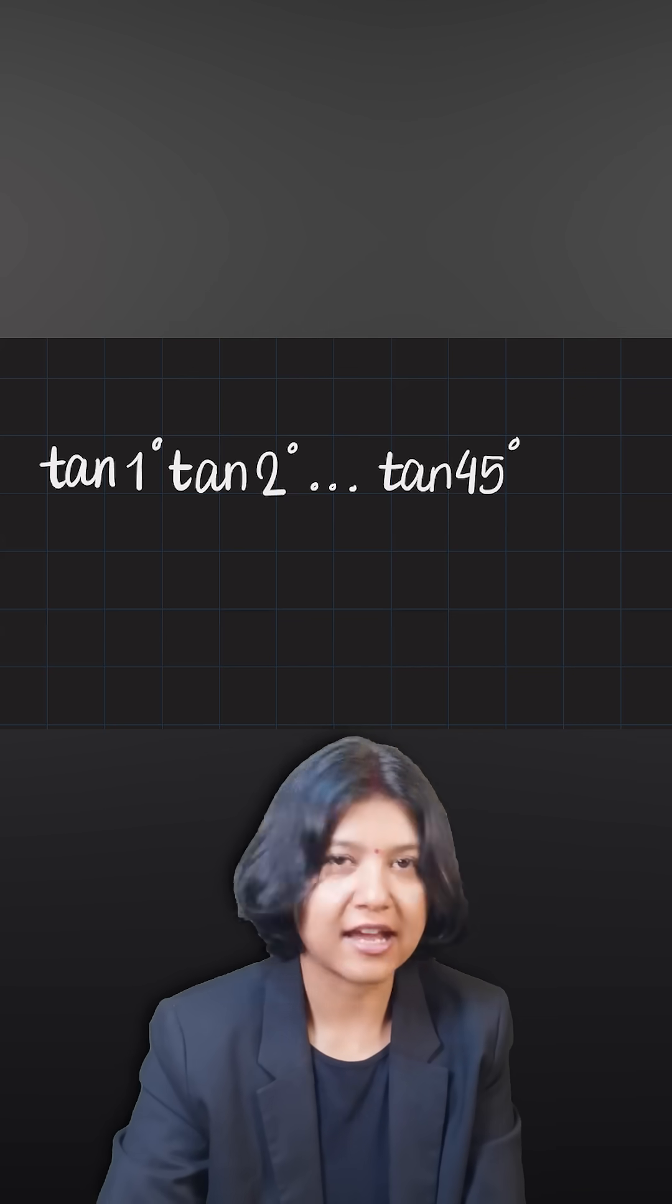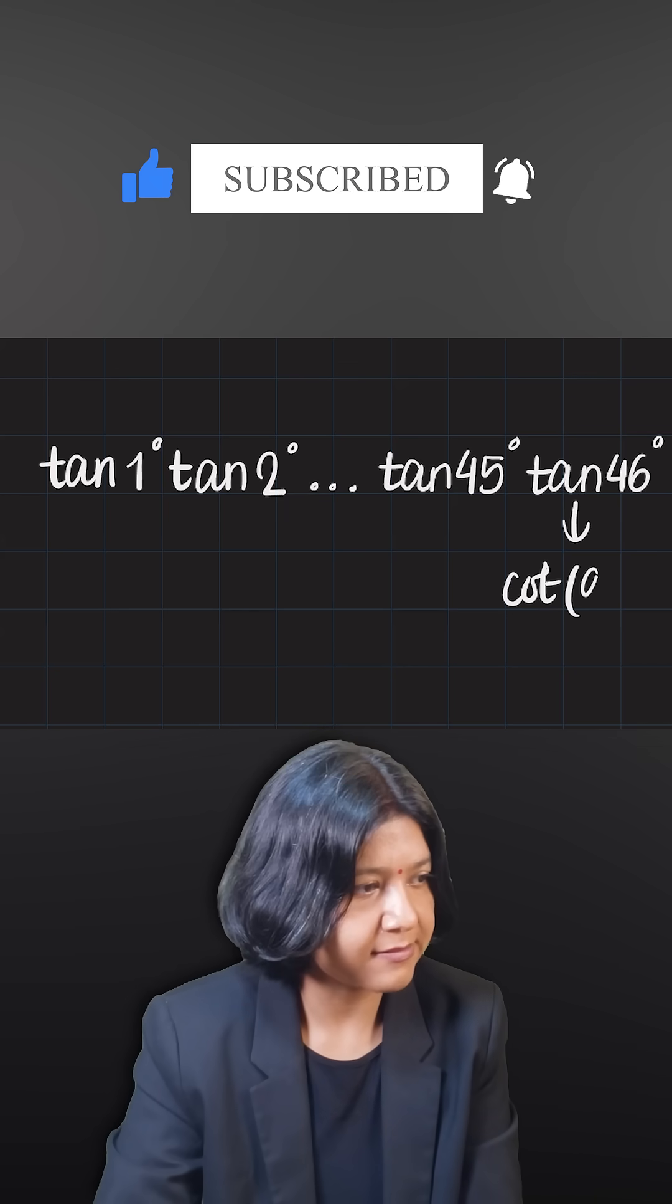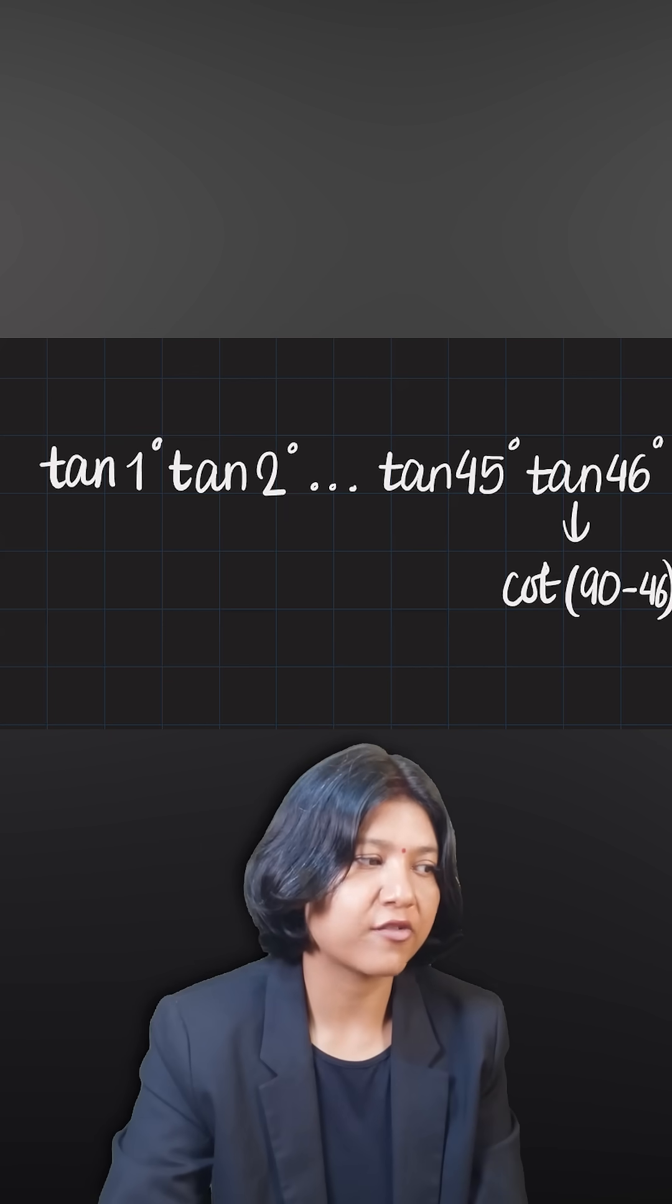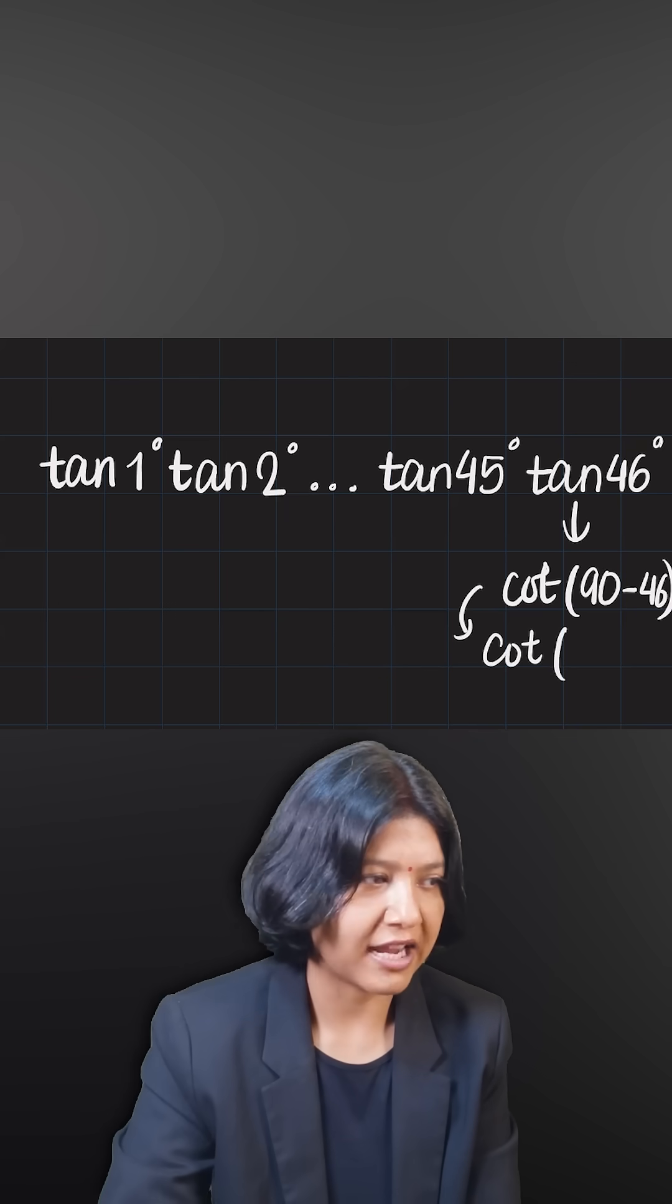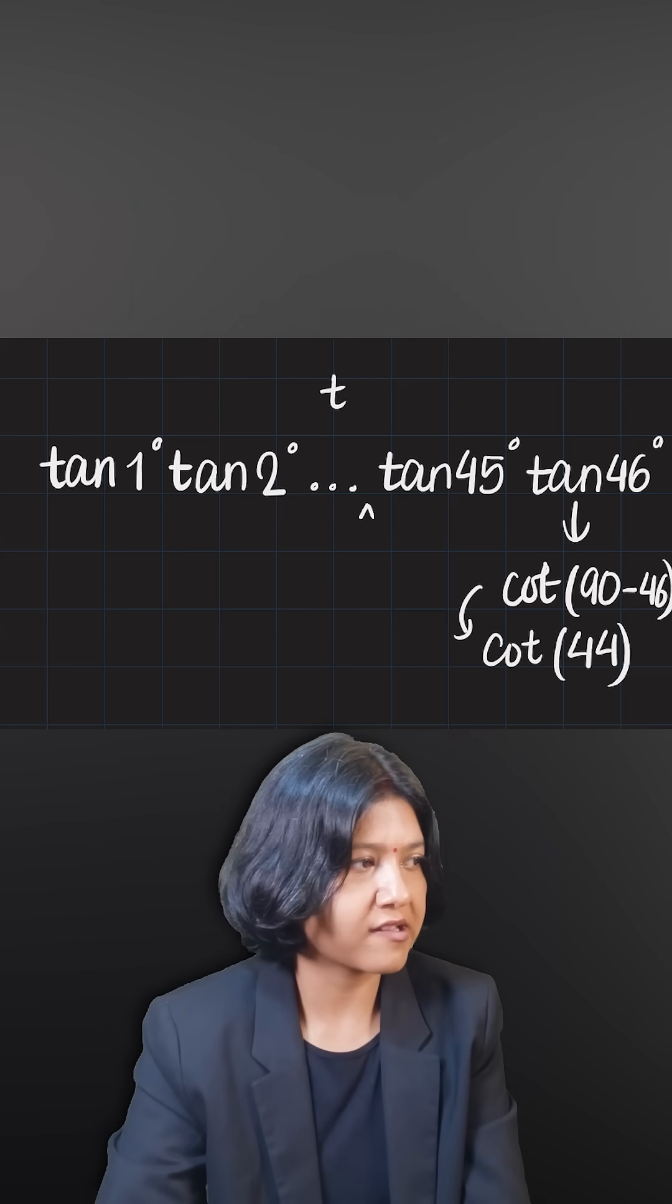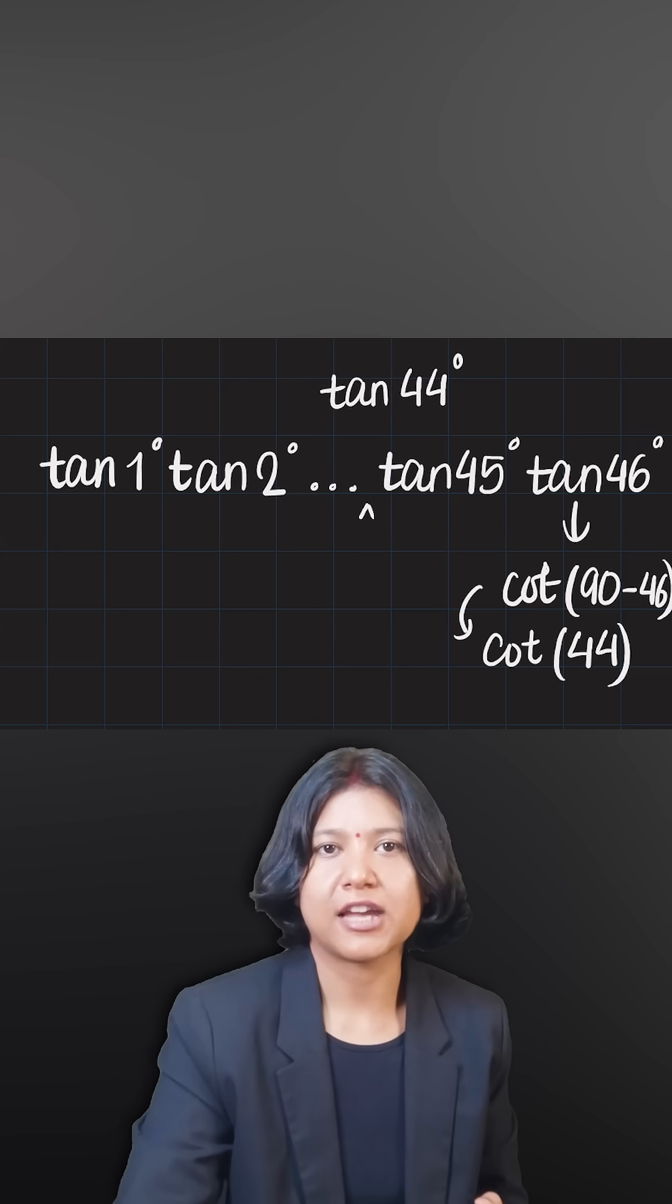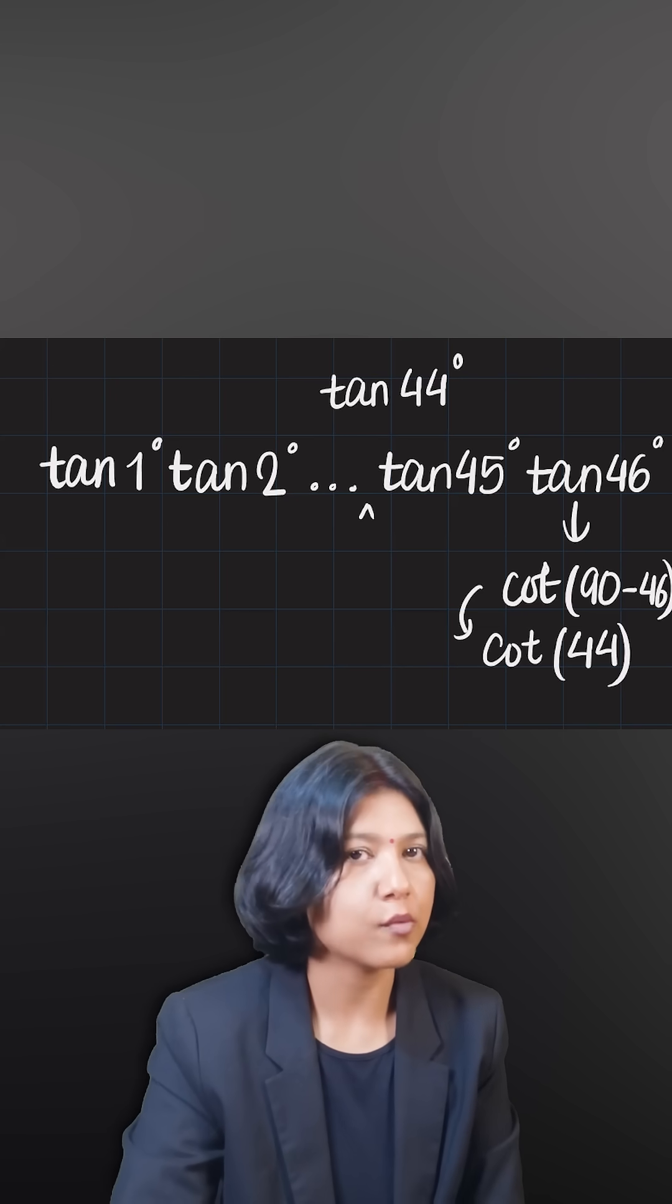Now for tan 46 and further, tan 46 I can write as cot of 90 minus 46. What happens if I do that? Cot of 90 minus 46 will give me cot of 44, and remember before getting tan 45 there was tan 44. Tan and cot, if they come together—tan theta times cot theta—they are reciprocal, so they'll give you 1.